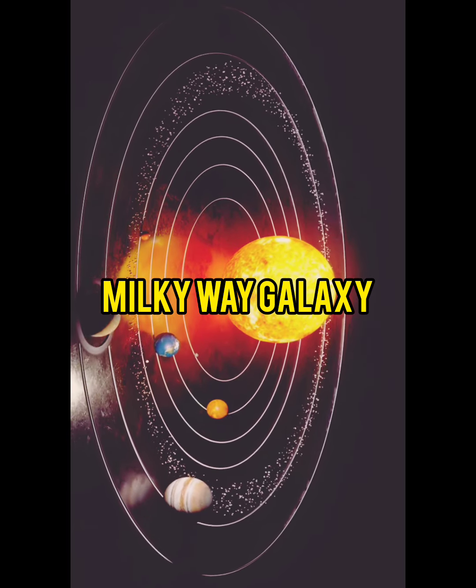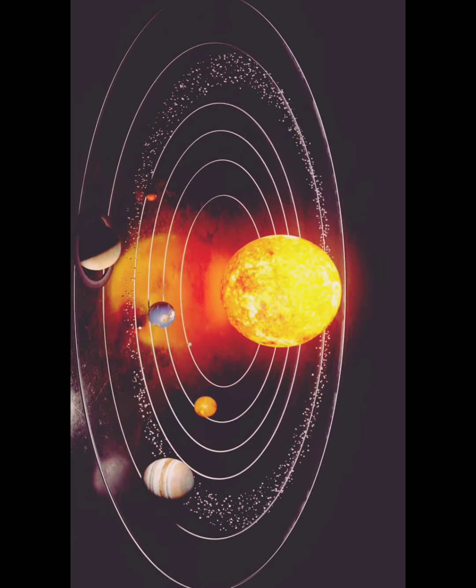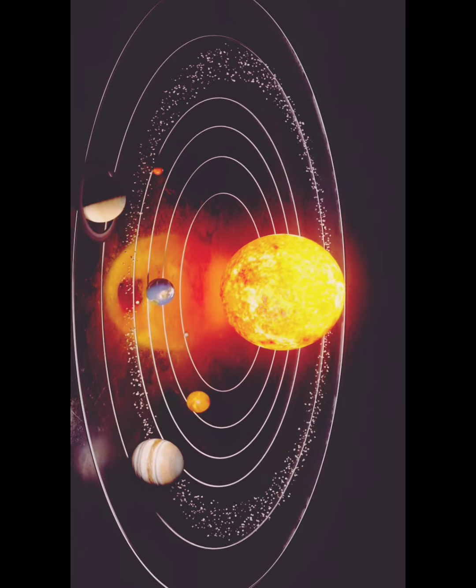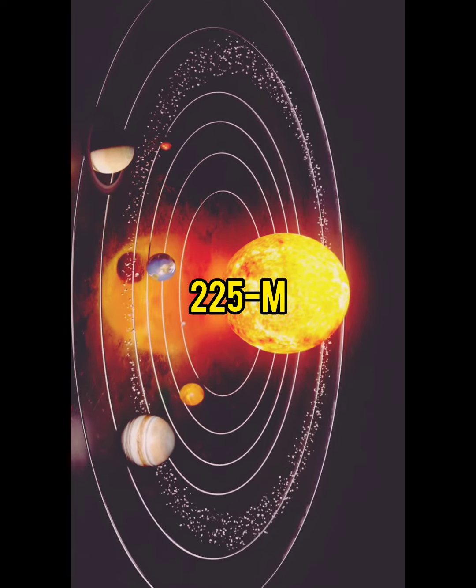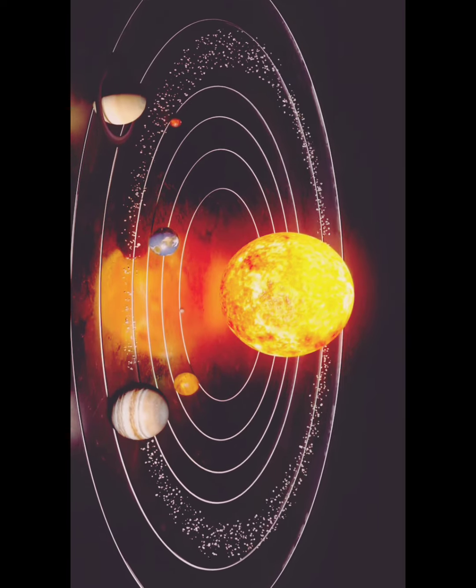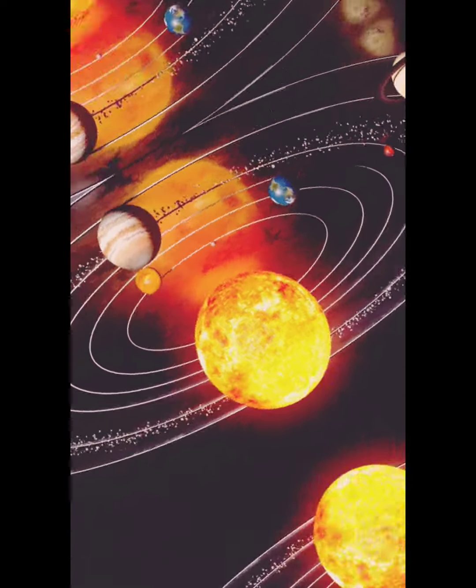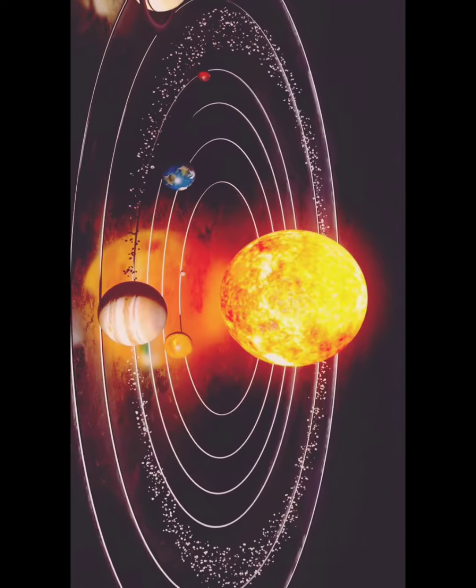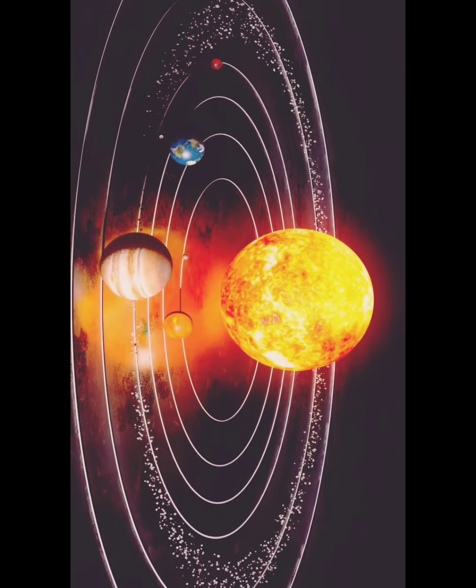The solar system orbits around the center of the galaxy about once every 225 million years. The Milky Way galaxy is just one of millions of galaxies that in turn make up the universe.